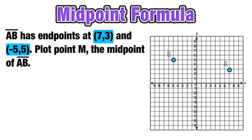Let's start by plotting those endpoints: A at (7, 3) and B at (-5, 5), then constructing line segment AB. We want to find the midpoint of this line segment — the XY coordinate that is directly in the middle, such that it cuts it into two congruent halves.